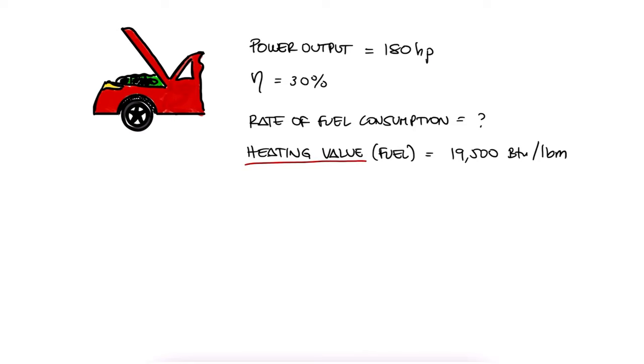For this case, remember that the heating value is the amount of energy in the form of heat that can be obtained from combusting one unit of mass, in this case a pound mass. We're being told that we can obtain 19,500 BTU per one pound of mass that we burn.